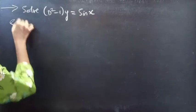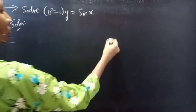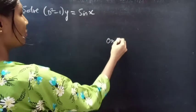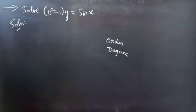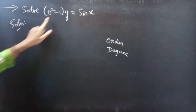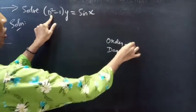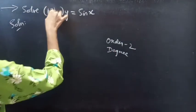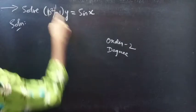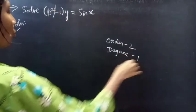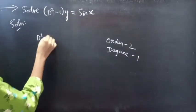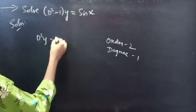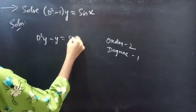Solution. First, let's find the order and degree of the given differential equation. Identify the highest derivative here. D² is the highest derivative, so our order will be 2, and the highest power of the highest derivative is the degree. The degree is 1. We can write the given equation as D²y - y = sin x.